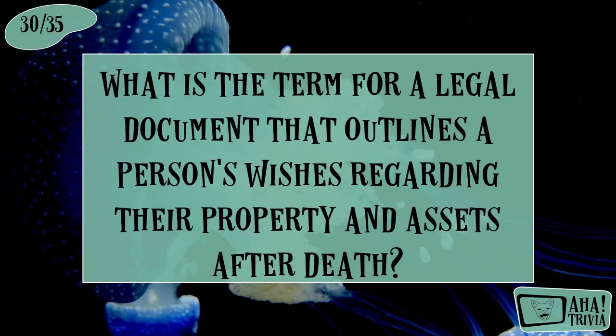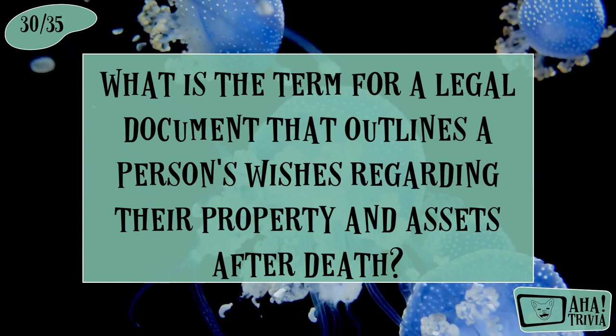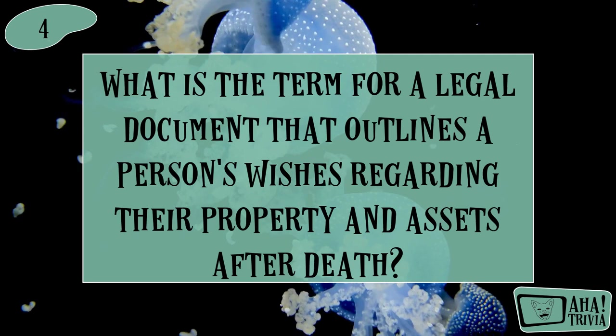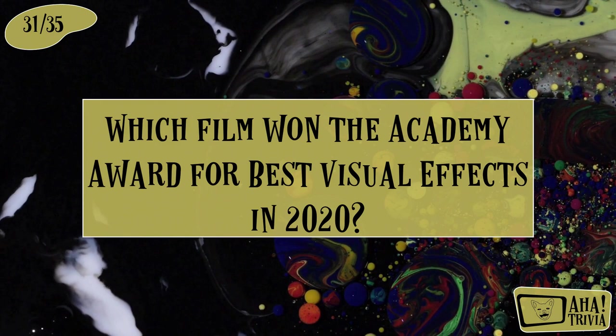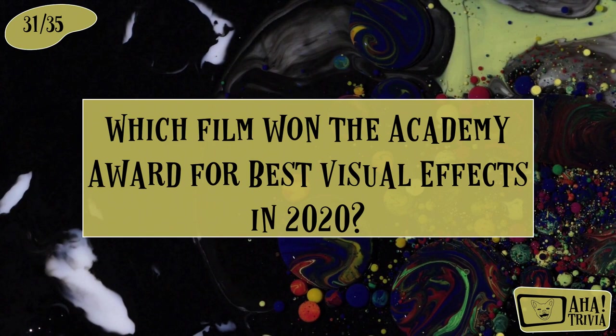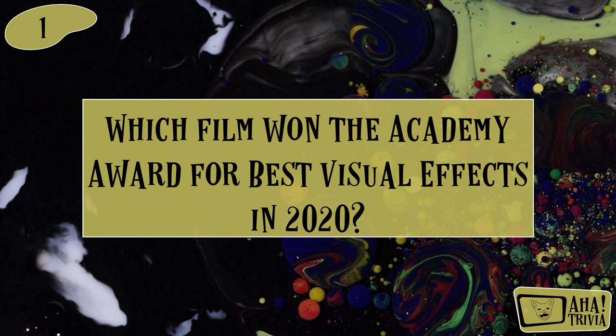What is the term for a legal document that outlines a person's wishes regarding their property and assets after death? Will. Which film won the Academy Award for Best Visual Effects in 2020? 1917.